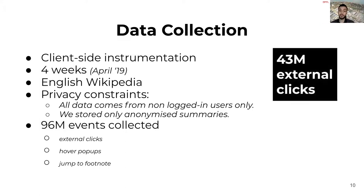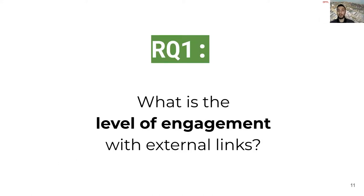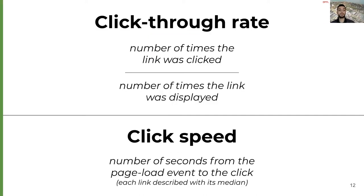Out of all these events, more than 43 million — or 40% — are clicks that bring the reader to content outside of Wikipedia. With this data, we are ready to approach the first research question: what is the level of engagement with external links? We look at engagement from two perspectives — click-through rate and click speed. For the first metric, we use the standard definition: the number of times a link was clicked divided by the number of times it was displayed. For the second metric, we measure the median time elapsed from the load of the page to the click.